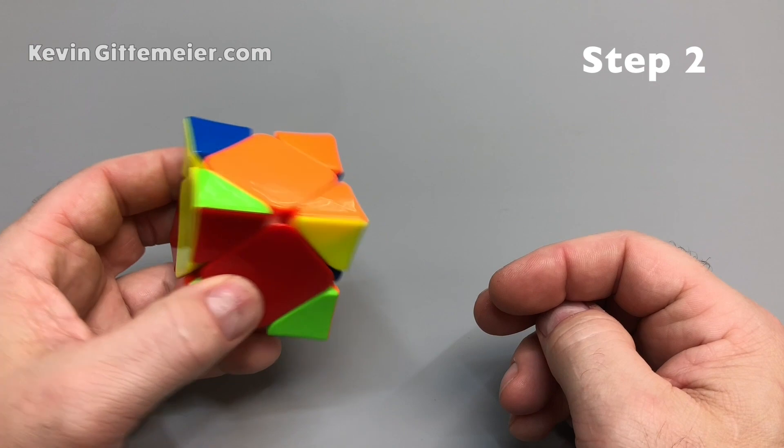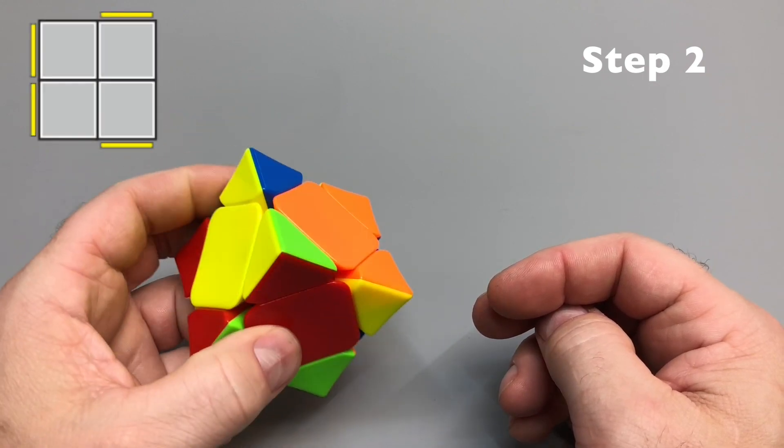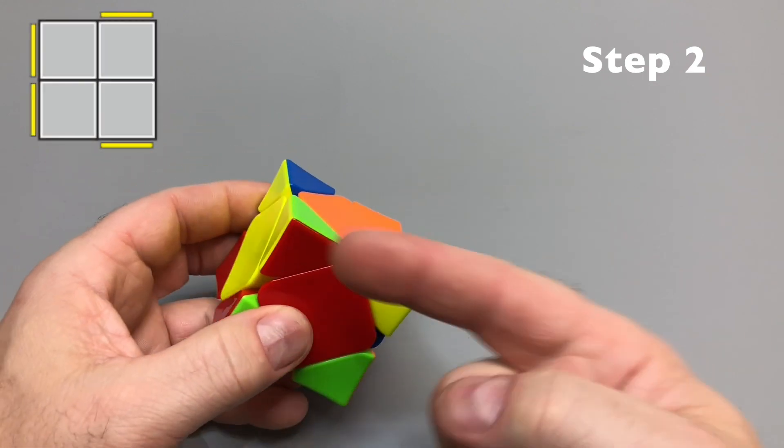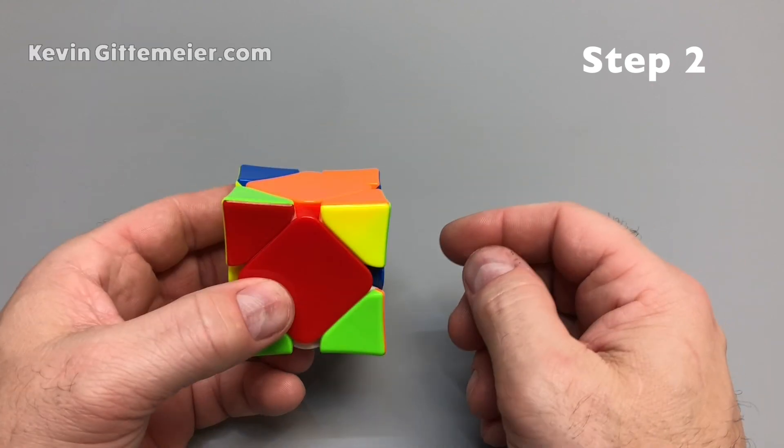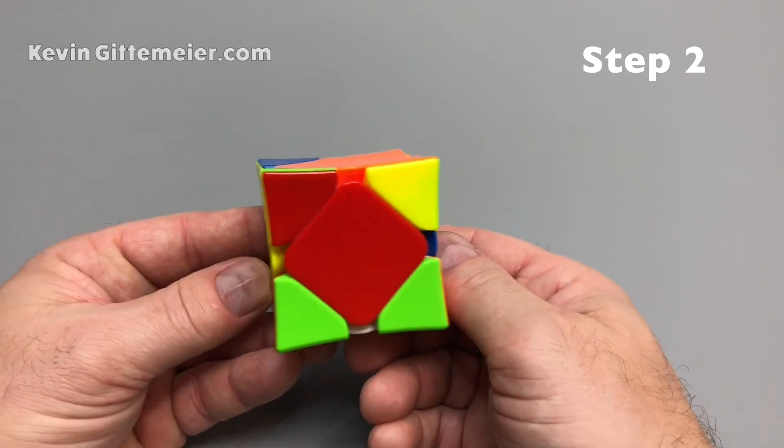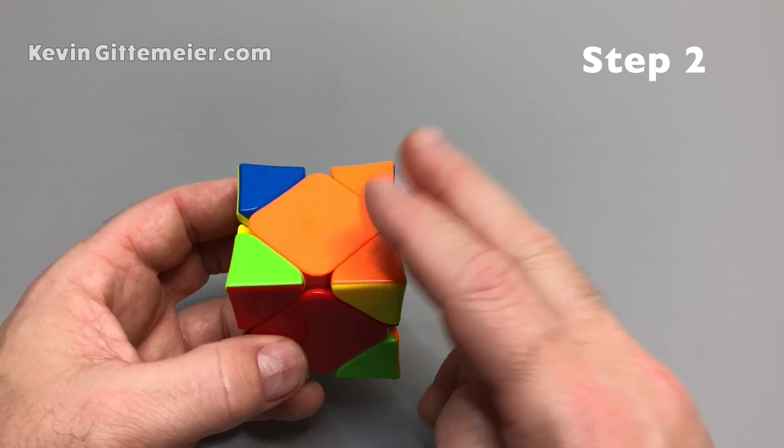All right, so what we're looking for is the equivalent of no fish on a 2x2 or a 3x3, which was two yellows facing to the left, and then a yellow fish, an eye on the front and the back. So now what we're going to do is hold it like this and do our sequence, which will bring all the yellows up to the top.